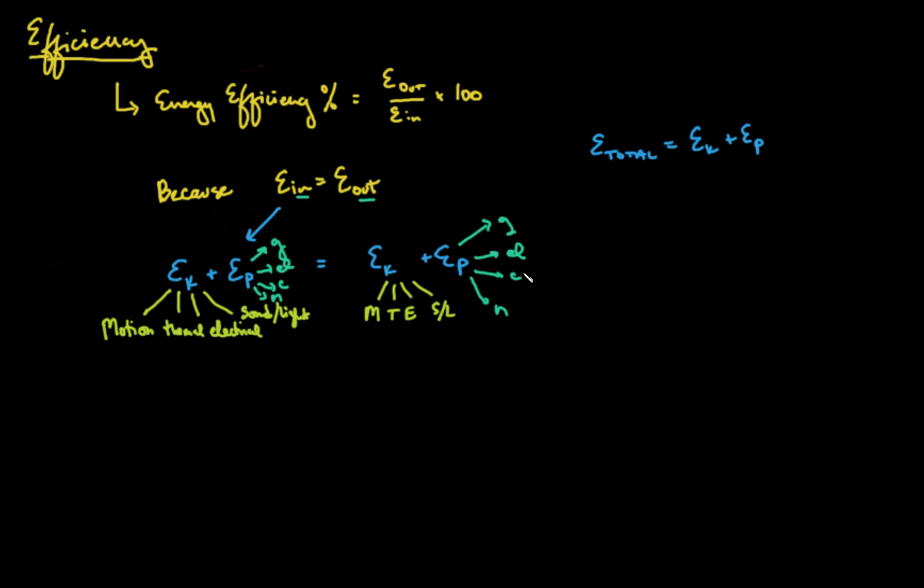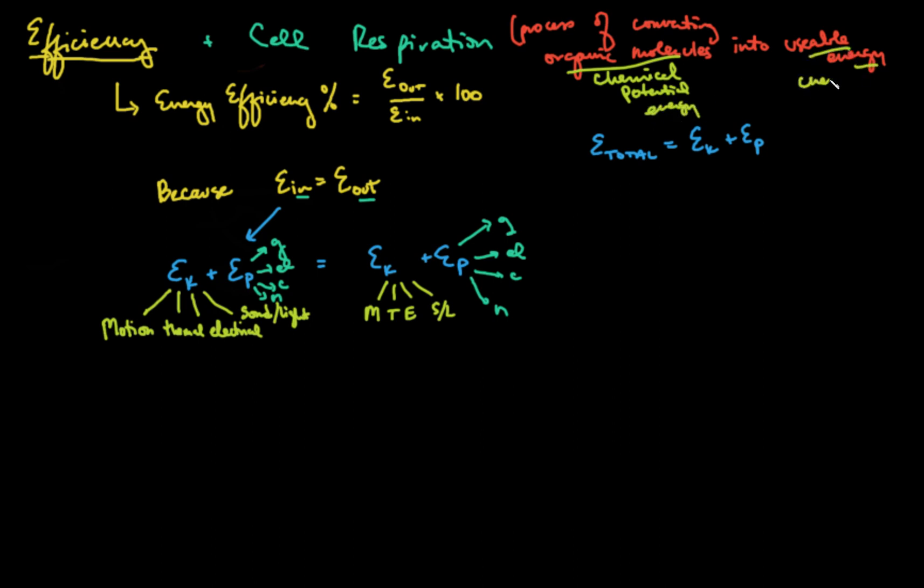In addition to efficiency, the other thing that we're going to talk about here is cell respiration. So we're going to take this idea and introduce cellular respiration, which is really the process of converting organic molecules into usable energy. What we're talking about here is chemical potential energy into something else that we can use, which is also chemical potential energy. It's just a matter of changing it from one molecule to another, and that molecule we're talking about here is ATP, which is critical for your proteins to function.